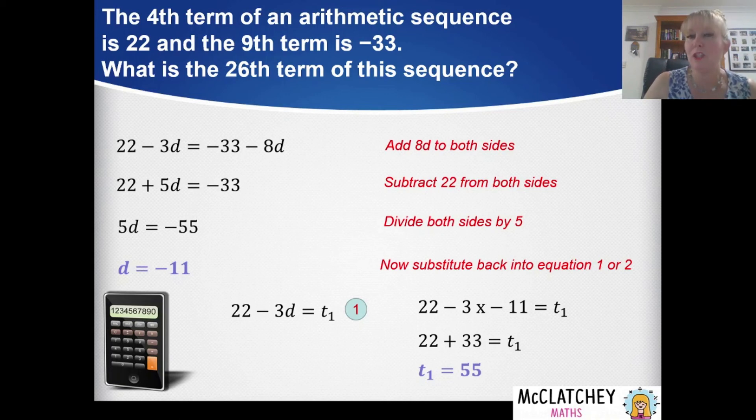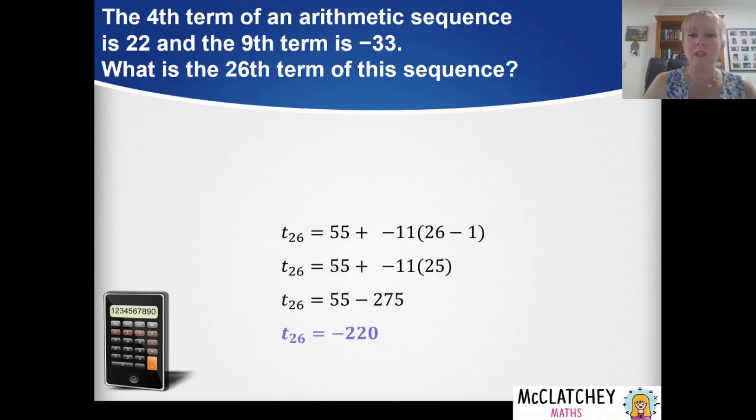Now all I need to do is substitute this information back into my general form of an arithmetic sequence and I'll be able to find the 26th term. Alternatively I could stick that into my calculator and press the equals button 26 times using the iterative function, kind of tedious. It's a lot easier to use algebra. So let's put in that first term 55 plus negative 11 was our common difference multiplied by 25 and that gives us negative 220. That's our 26th term.